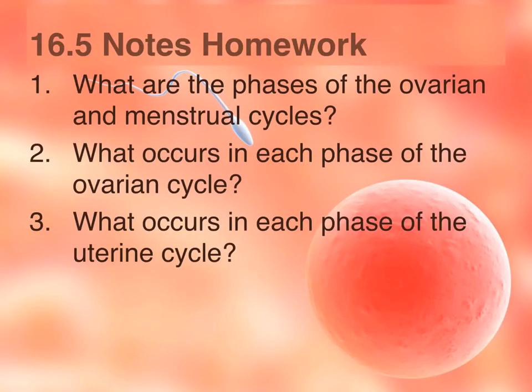16.5 note homework. Number one: what are the phases of the ovarian and menstrual cycle? Number two: what occurs in each phase of the ovarian cycle? Number three: what occurs in each phase of the uterine cycle?